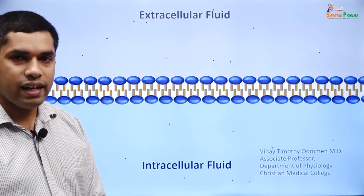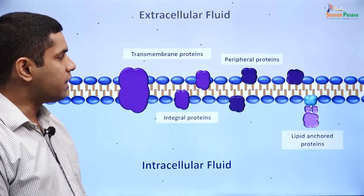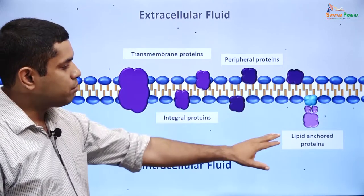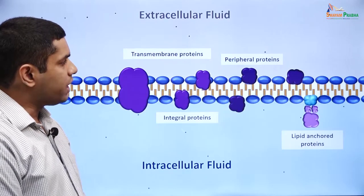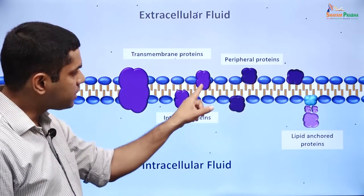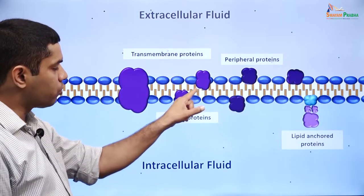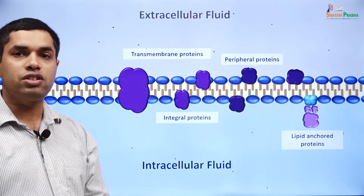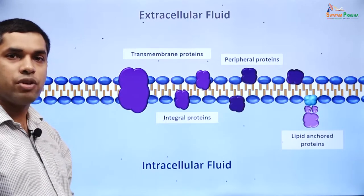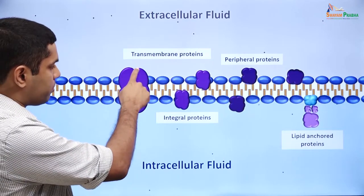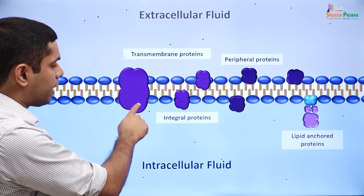Now let's look at one way of classifying proteins that are present on the cell membrane. Proteins can be classified either as peripheral proteins, integral proteins, or lipid-anchored proteins. Peripheral proteins do not extend into the hydrophobic core of the membrane, whereas integral proteins extend into the hydrophobic core. A particular type of integral protein is something called a transmembrane protein, which extends across both layers of the cell membrane, spanning the outer layer as well as the inner layer.